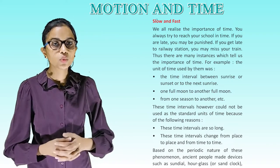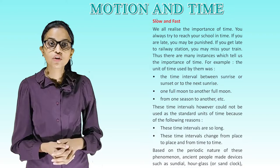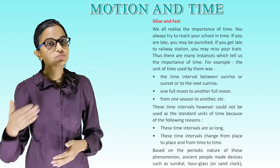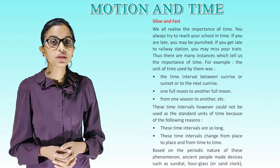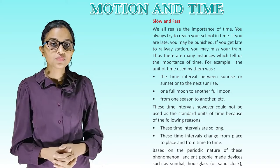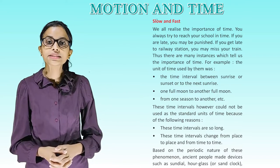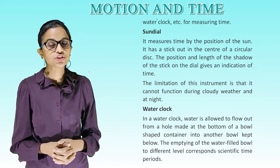These time intervals however could not be used as standard units of time because of the following reasons. These time intervals are so long. These time intervals change from place to place and from time to time. Based on the periodic nature of these phenomena, ancient people made devices such as sundial, hourglass or sand clock, water clock etc. for measuring time.